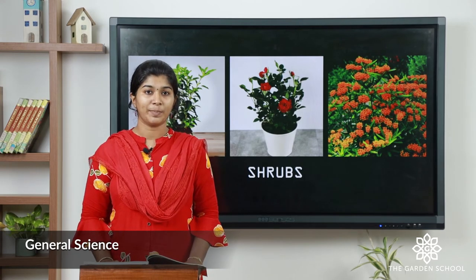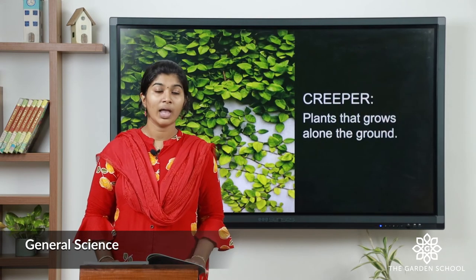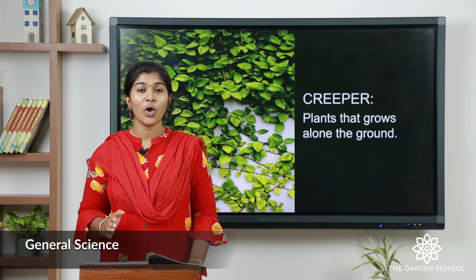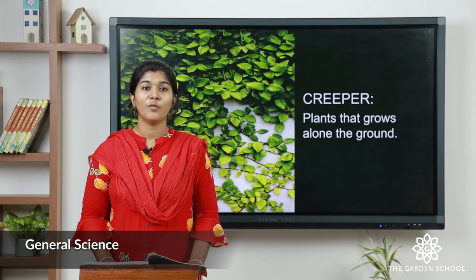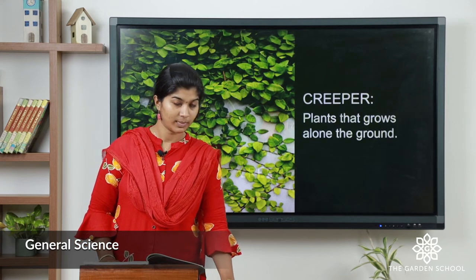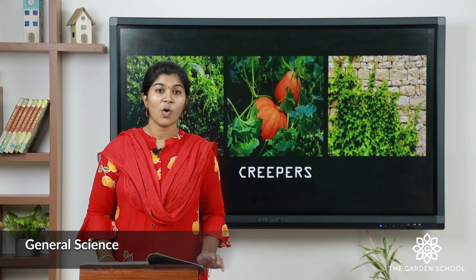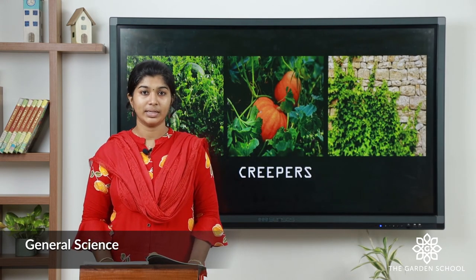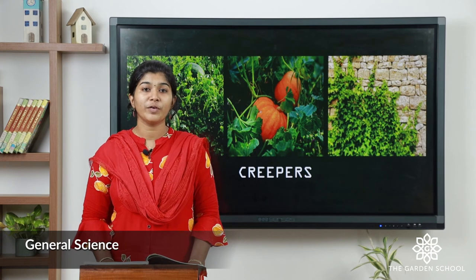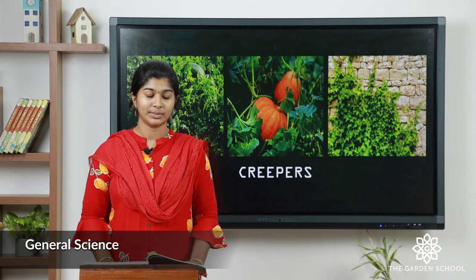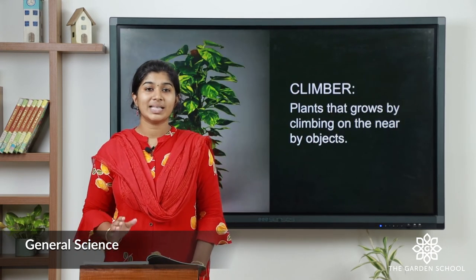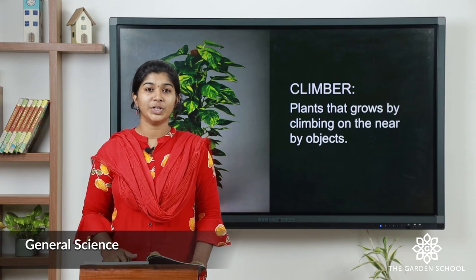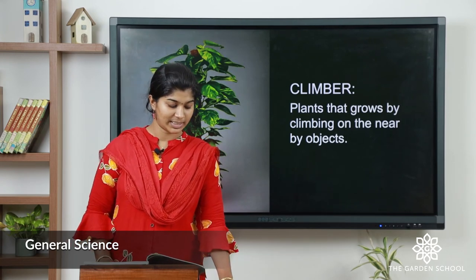The fourth one is called creepers. Plants that grow along the ground are called creepers, for example watermelon and pumpkin. The fifth one is called climbers. Plants that climb a nearby object to grow are called climbers.